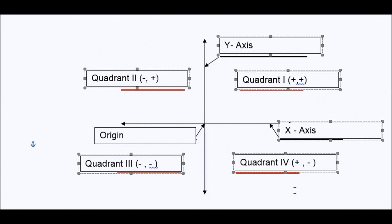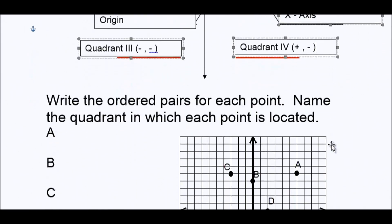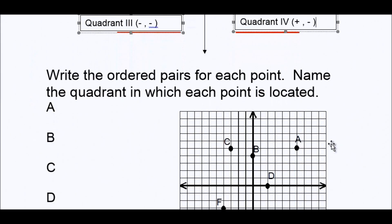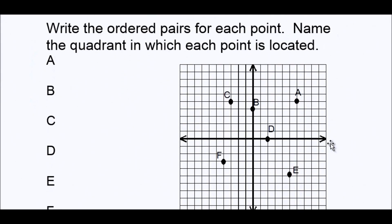And these are the parts of the coordinate plane. Now what we're going to do is we're going to write the coordinates of these points — the points that are plotted on the coordinate plane.